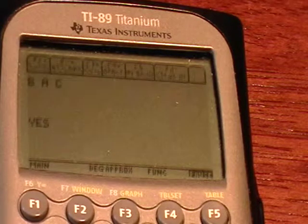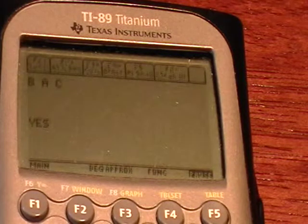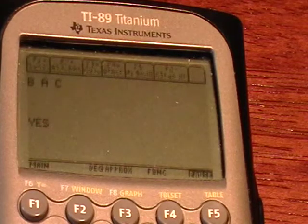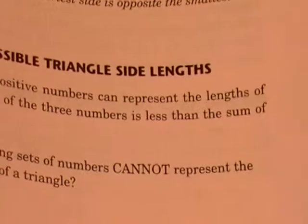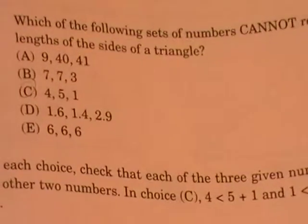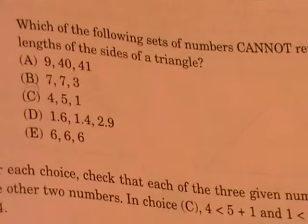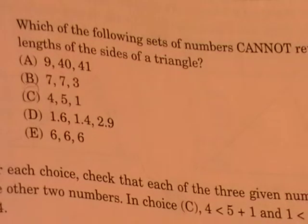And you notice the first thing that comes up is BAC instead of ABC. So we would then look at our problem and there it is, option C, 4, 5, 1. So we grid that in and move on to the next problem.